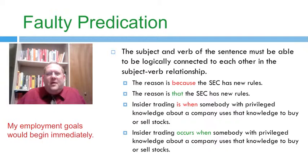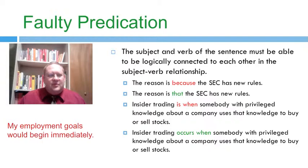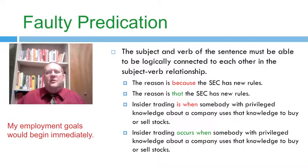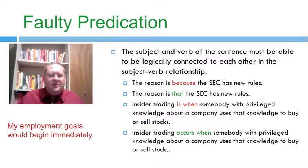Probably the two most common kinds of faulty predication occur with these constructions: 'The reason is because the SEC has new rules.' A reason cannot be 'because' — 'because' is the beginning of an adverb clause, 'reason' is a noun, and an adverb can't be linked by a linking verb to a noun because adverbs don't modify nouns. It should be: 'The reason is that the SEC has new rules.' Similarly, 'insider trading is when somebody with privileged knowledge about a company uses that knowledge to buy or sell stocks' — insider trading can't be 'when' because 'is' cannot link a noun to an adverb. It has to link it to either an adjective or another noun. 'Insider trading occurs when' works because 'occur' is not a linking verb.